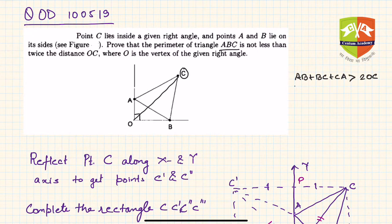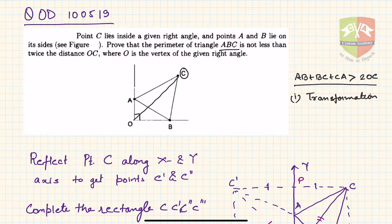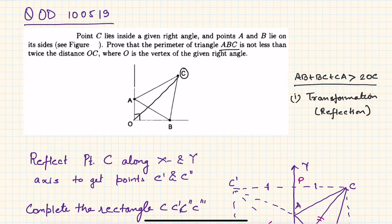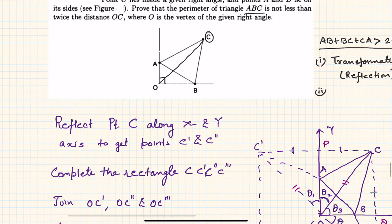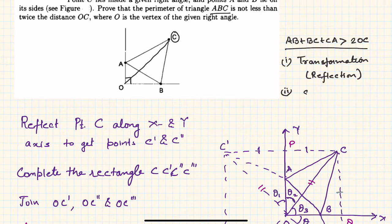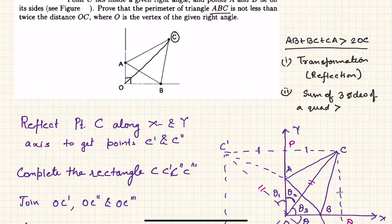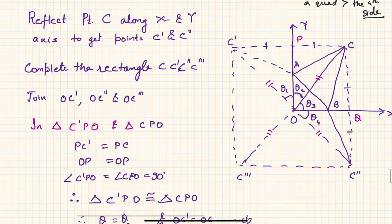Now let us see how to do it. In this question, two underlying concepts are used. One is transformation — specifically reflection of a point around a line. The second is that the sum of three sides of a convex quadrilateral is greater than the fourth side.